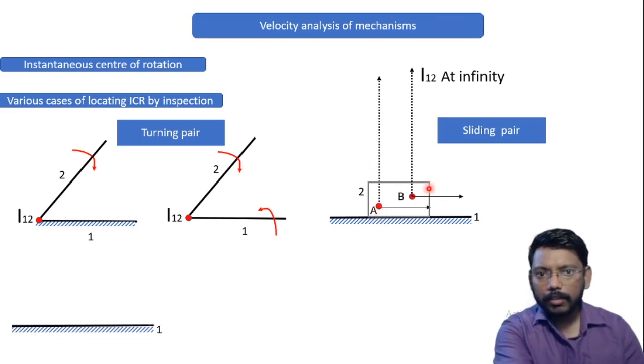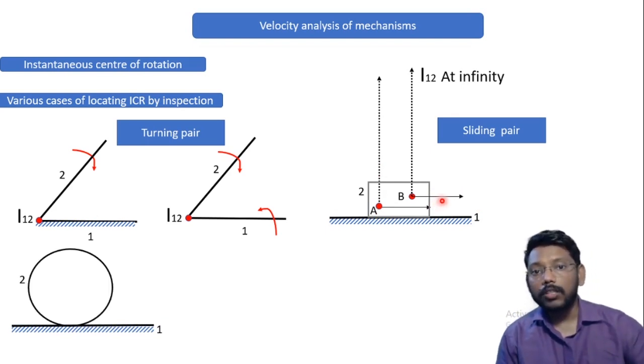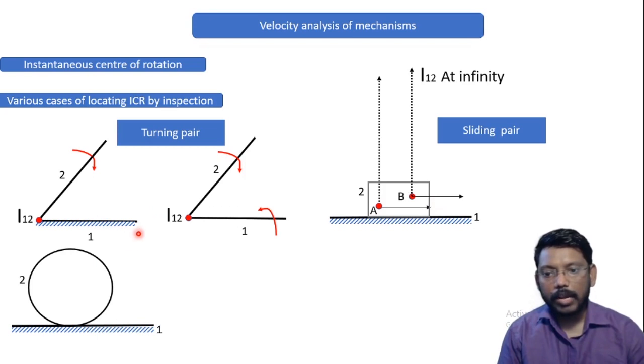Coming back to the third case, we can see there is a fixed surface, that is link number one. And this time rather than having a box, we are having a circle which is going to roll on this particular link number one. So we are having two links, link number two and link number one.